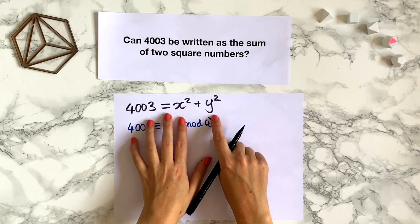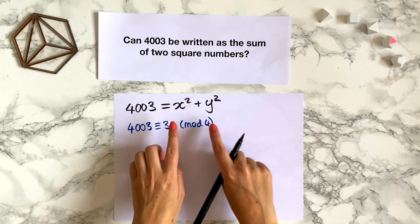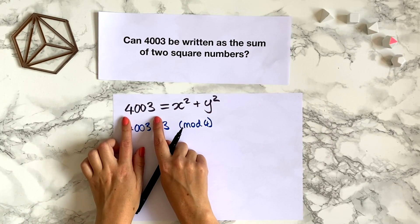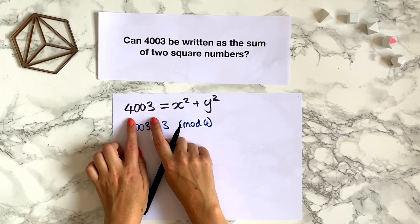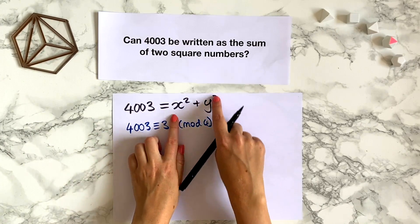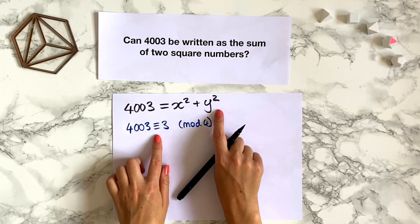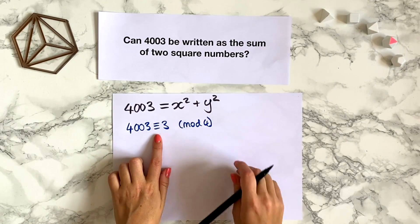But let's say that we have these numbers x and y such that x squared plus y squared equals 4003. Because x squared plus y squared equals 4003, this means that x squared plus y squared must also be congruent to 3 modulo 4.